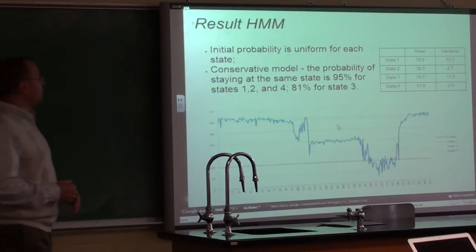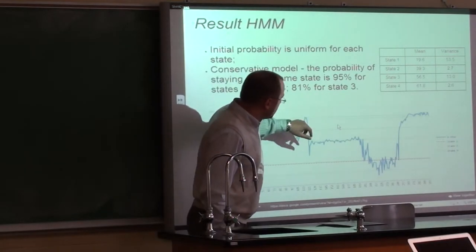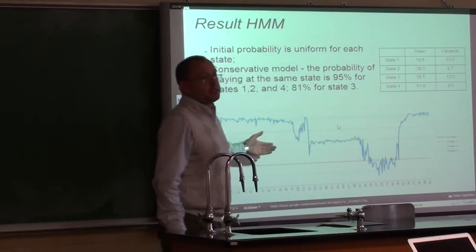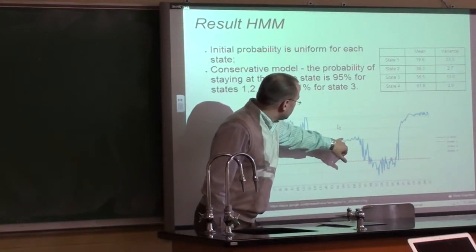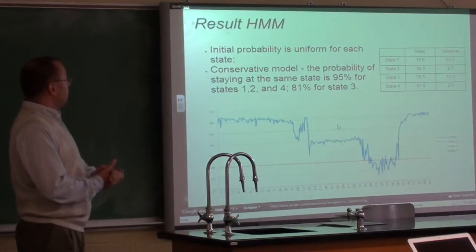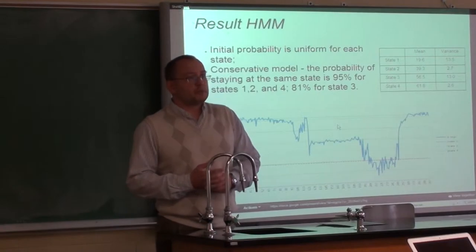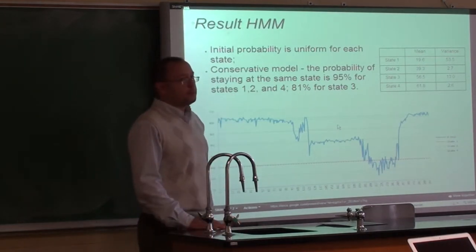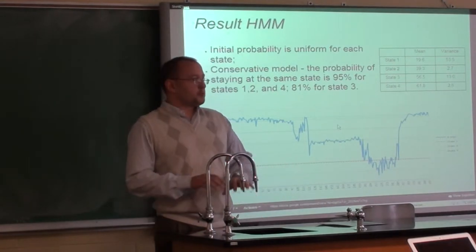Looking at the results again, for March 3rd the means for state one, state two, and state four align well with the data. State three had such high variance it doesn't make much sense to include it. The model recognized state two and state four. After training, we got a very conservative model — it doesn't want to jump to other states. The probability of staying in the same state is 95% for states one, two, and four. State three — that's instability — has a 20% probability of jumping to other states.